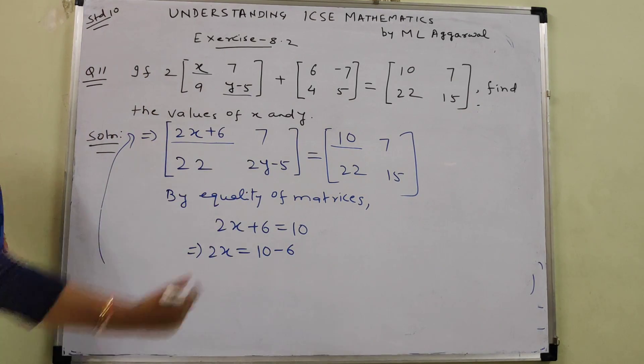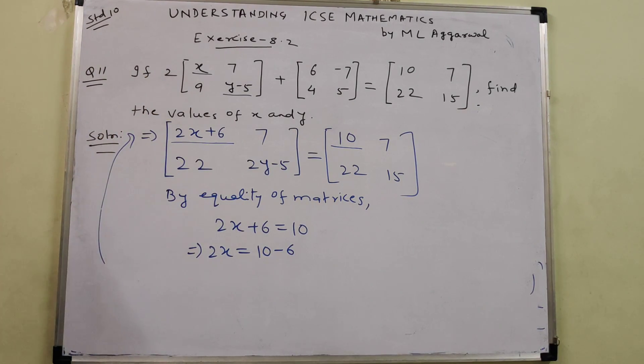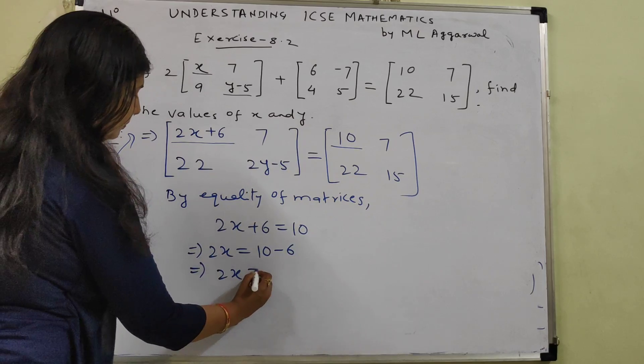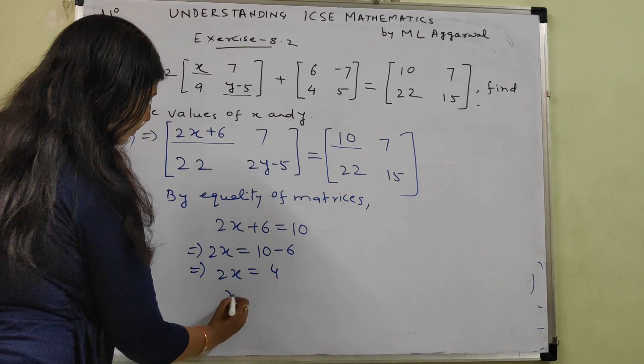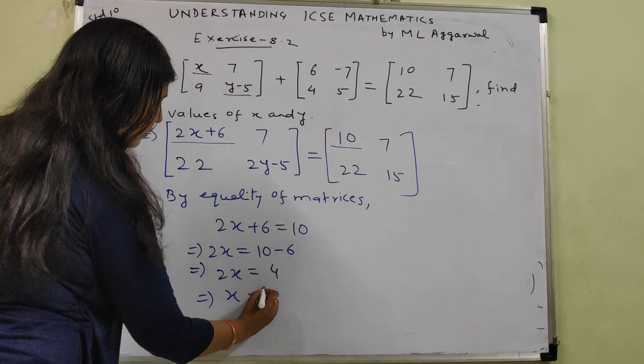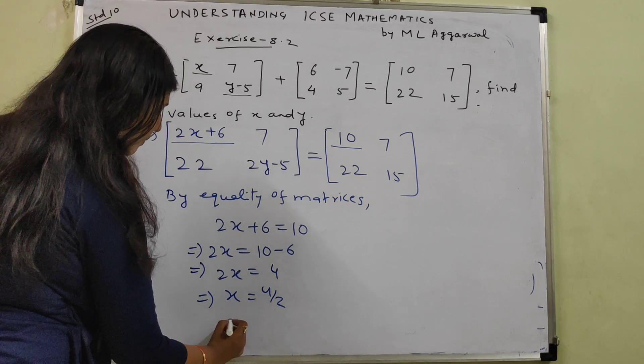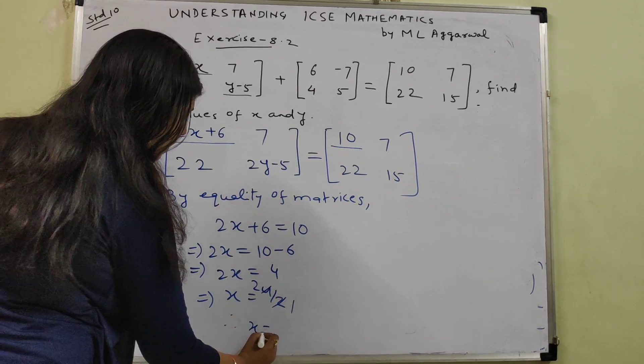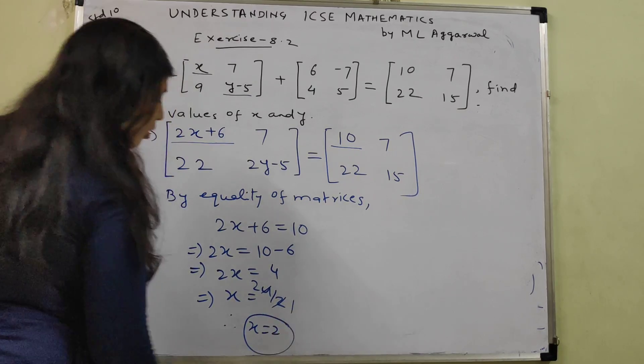This implies 2X equal to 10 minus 6. Plus 6 will get shifted to right hand side and it will become minus 6. So 2X equals 4, X equals 2. Thus we have got the value of X.